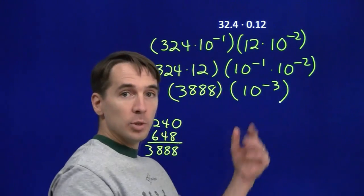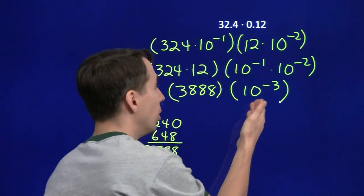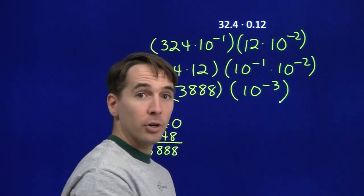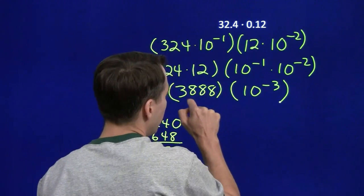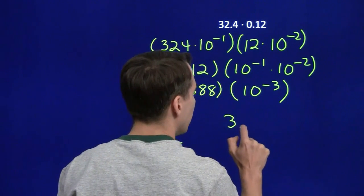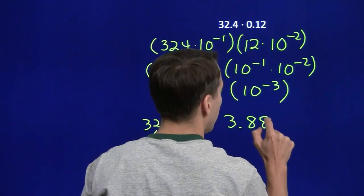We know how to deal with an integer times the power of 10, we can write this as a decimal. Multiplying by 10 to the negative 3rd is the same as dividing by 10 cubed, it's the same as dividing by 10 three times, move the decimal point three places to the left, and we get 3.888.